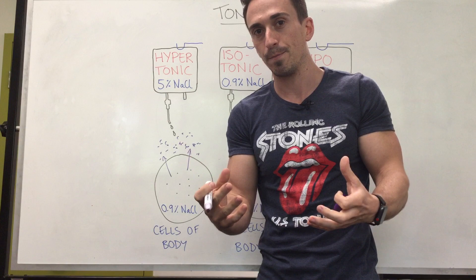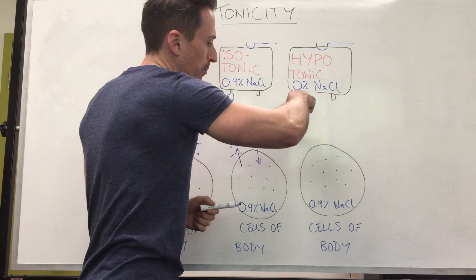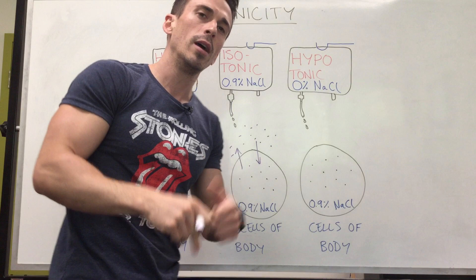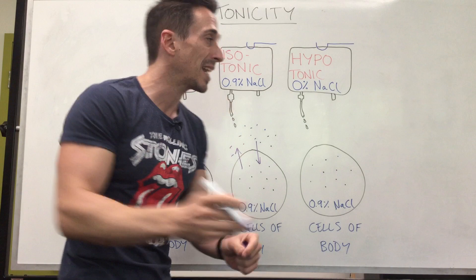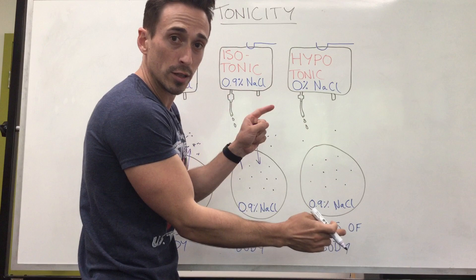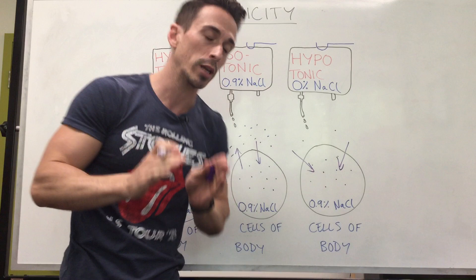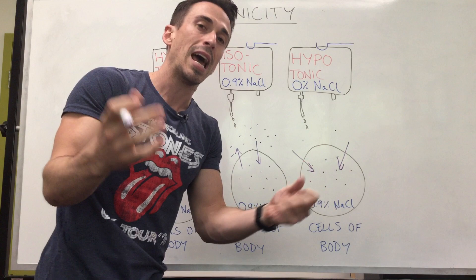Now a hypotonic solution — hypo means less than — means the concentration of what we're introducing to the body is less than that of the cell. Here I've chosen 0% sodium chloride, which could be plain water. Water is actually a hypotonic solution. If you introduce that to the body, the concentration outside the cell is far less than inside, so osmosis pulls water towards the higher concentration of solutes inside the cell. Water gets dragged into the cell, causing it to get big, round, and ultimately burst. This bursting is called lysis.